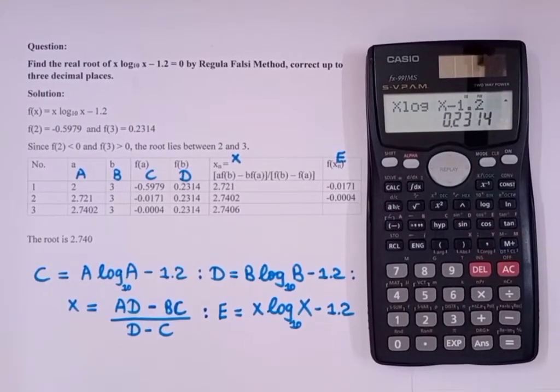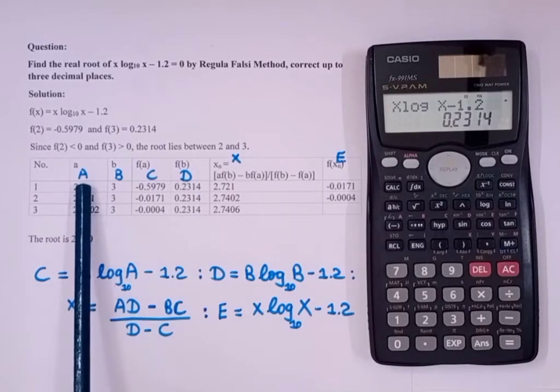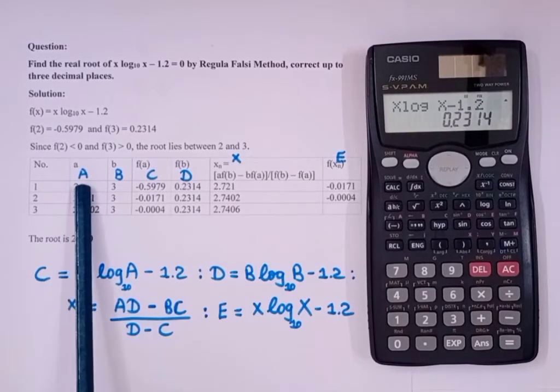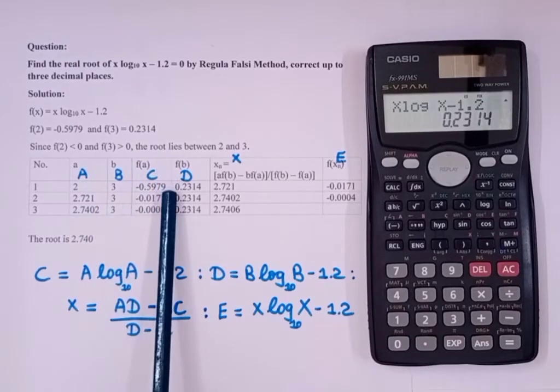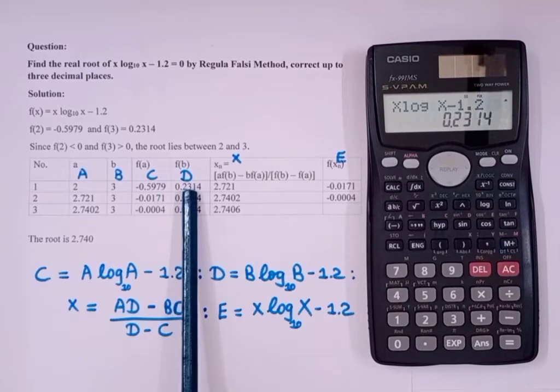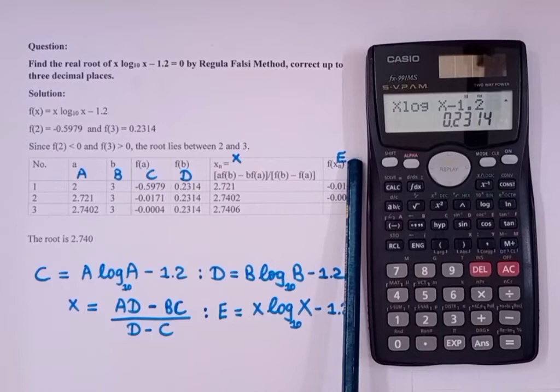Next, we'll have to write this programming in the calculator. Firstly, as you can see here, a is denoted by capital A, b is denoted by capital B, f(a) is capital C, f(b) is capital D, xn is capital X, and f(xn) is capital E.